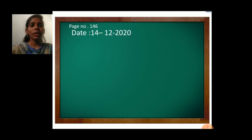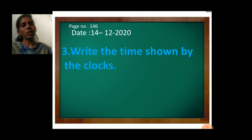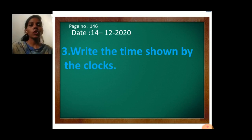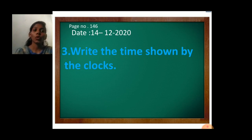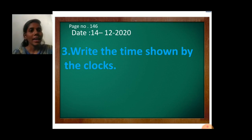Now open your maths textbook, page number 146. Write today's date — 14 December 2020. Now read the third question: Write the time shown by the clocks. Here we have to write the time which is shown by the clocks. First, whenever you write the time, you will write the hours and then concentrate on the minutes.